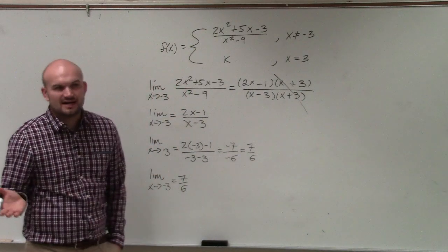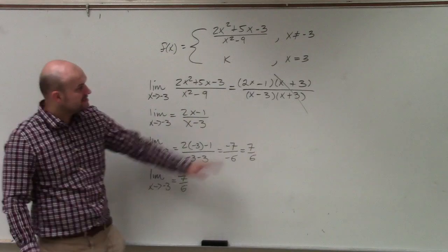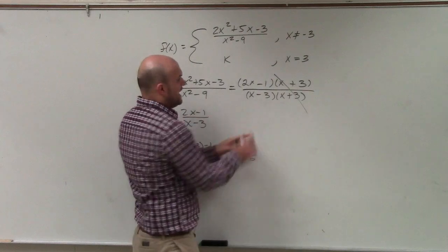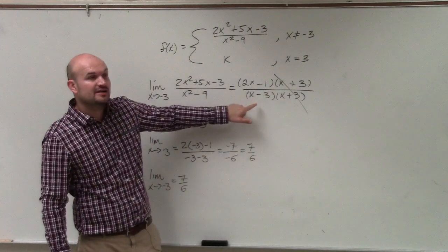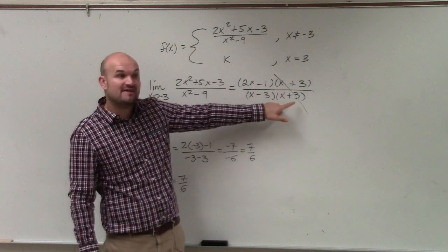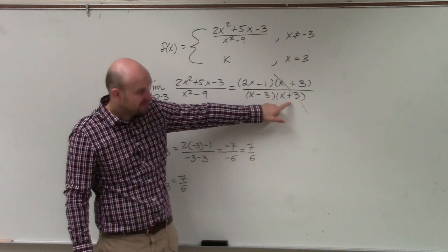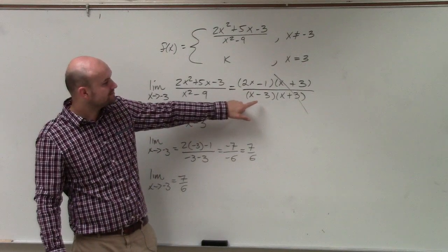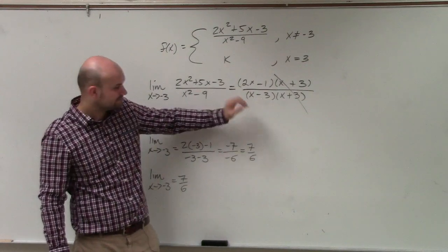That's going to be negative 7 over negative 6, which equals 7 over 6. So let's talk about discontinuities again. We have two discontinuities: a discontinuity at x equals negative 3 because negative 3 makes that 0, and a discontinuity at x equals 3 because 3 makes that 0. Since this factor can be factored out, that's what we call a removable discontinuity. This other discontinuity is not removable, so that's a non-removable discontinuity.